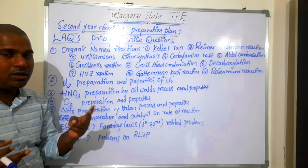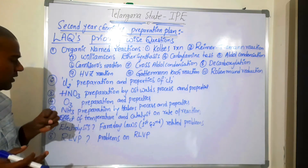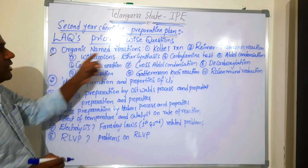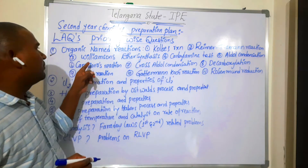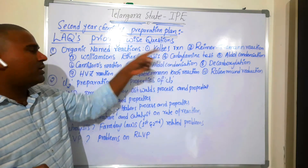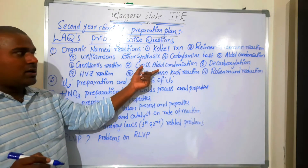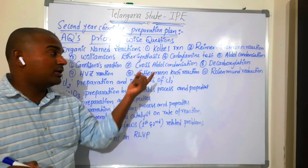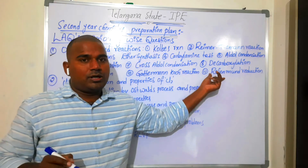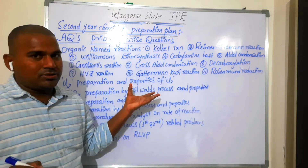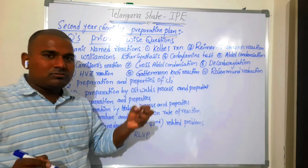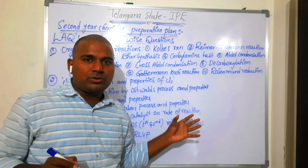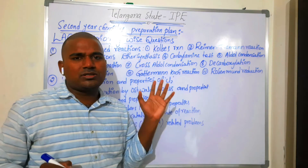What are the questions we need to answer? First, named reactions in organic chemistry: Kolbe's reaction, Riemer-Tiemann, Williamson ether synthesis, carbylamine test, aldol condensation, Cannizzaro, cross aldol condensation, decarboxylation, HVZ reaction, Gattermann-Koch reaction, Rosenmund reduction. These are some important named reactions — you should perfectly learn and be thorough with each one, writing the definition and one example.